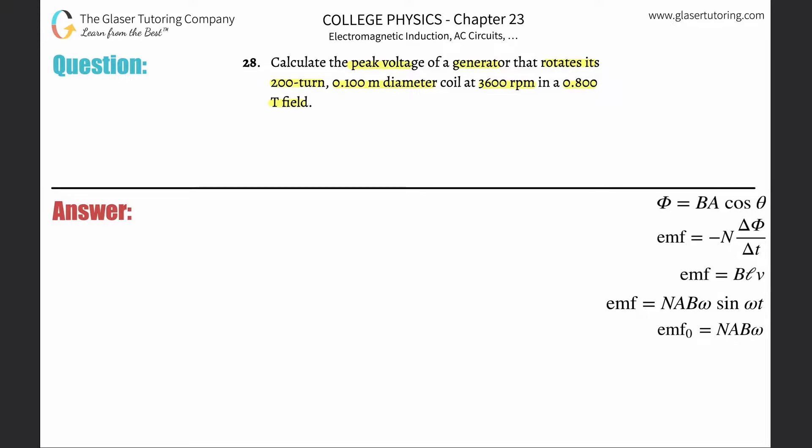So we need this formula here on the bottom right-hand side. This is EMF sub zero, which represents peak EMF or peak voltage. I'm going to call this V sub P for peak voltage.